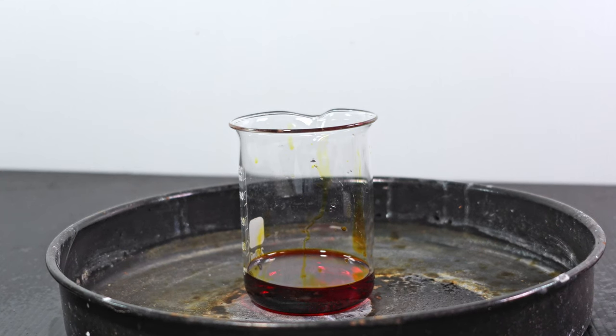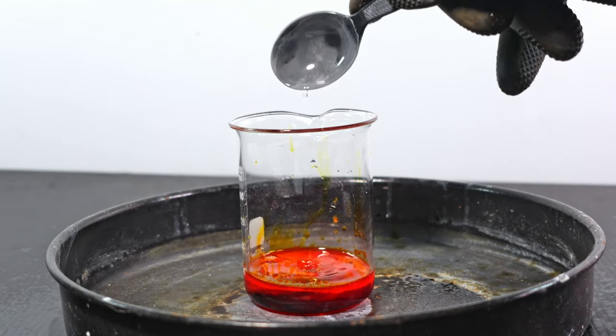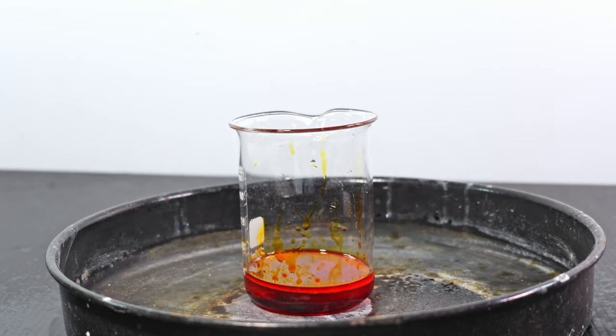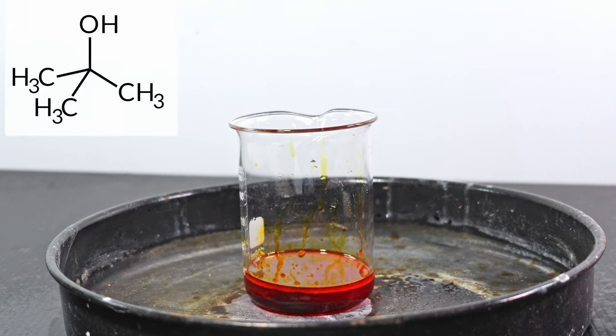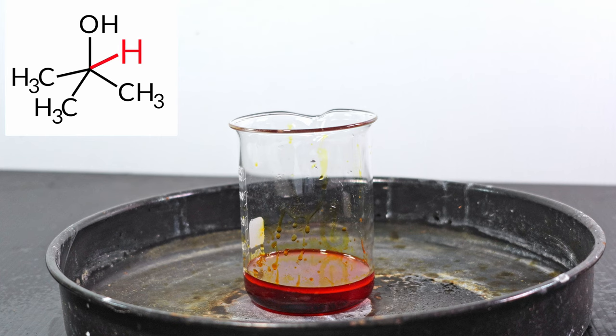For the third test, I am reacting chromic acid with tertbutanol. As you can see, nothing really happened other than a brief red flash. This is because tertbutanol is a tertiary alcohol, meaning the hydroxyl group is bonded to a carbon with three methyl groups. Chromic acid cannot oxidize into a ketone or carboxylic acid because there are no hydrogens on the functional group.